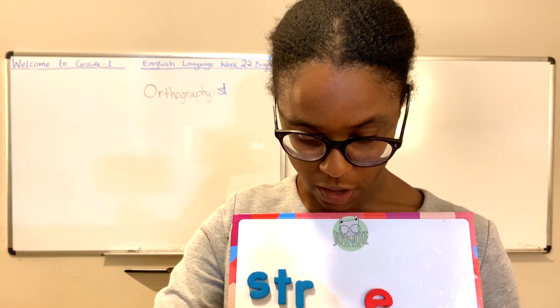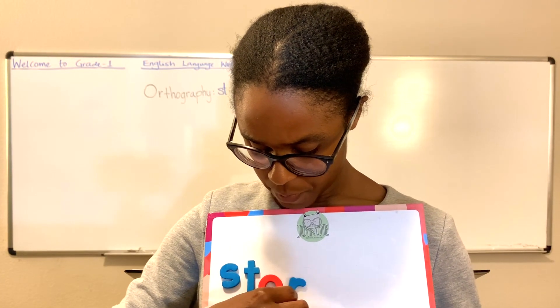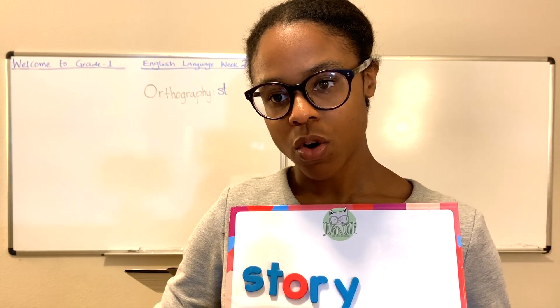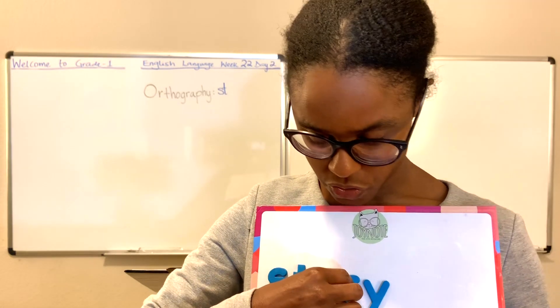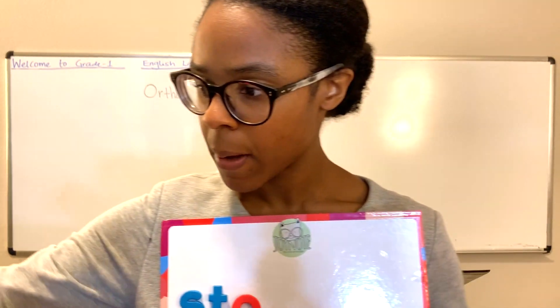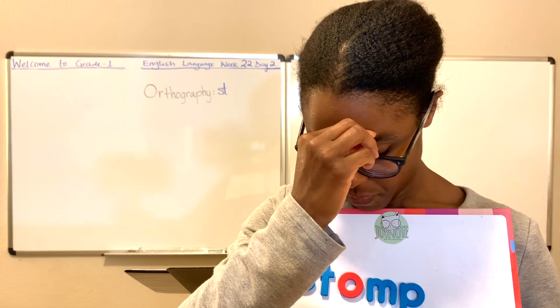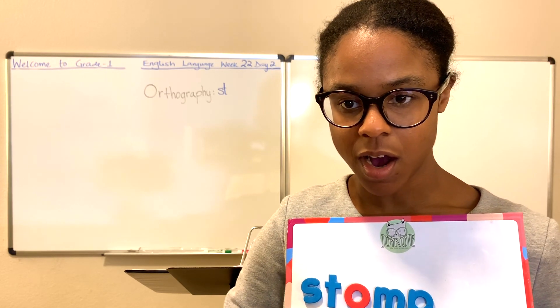Let's switch our vowel I and replace it with an O. What do you think about this word? S-T-O-R-Y — story. Please tell me a story. Let's try another word: S-T-O-M-P — stomp. Stomp your feet. Stomp.